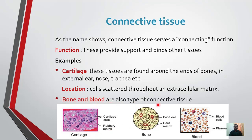Blood is also a type of connective tissue. Its function involves the transportation of different types of minerals, digested foods, and salts.